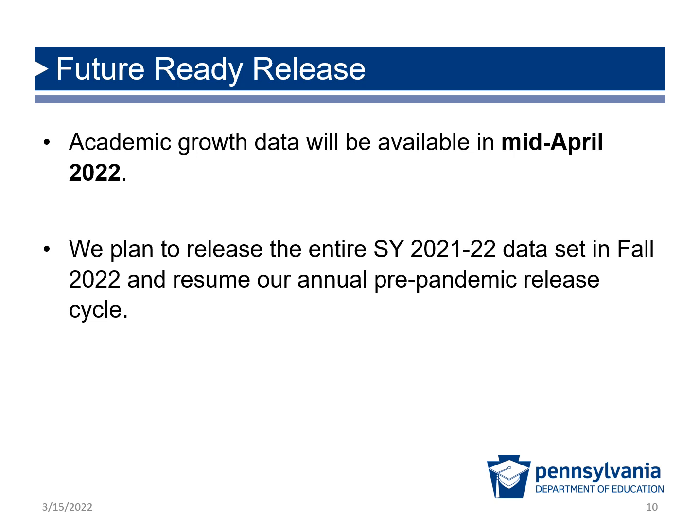We plan to release the entire 2021-22 school year data set in the fall of 2022 and resume our annual pre-pandemic release cycle. It's important to remember that there is no waiver for participation in school year 2021-22. Students are expected to test as the pandemic effects normalize, and schools not reaching 95% participation will be subject to adjusted proficiency scores.